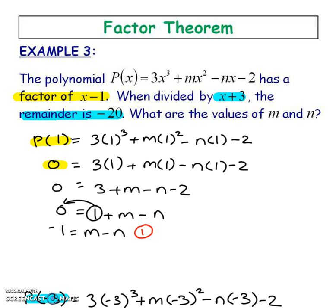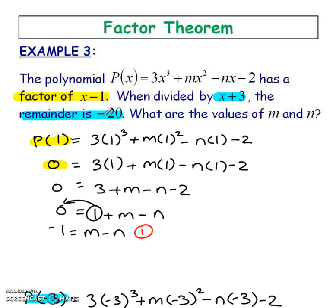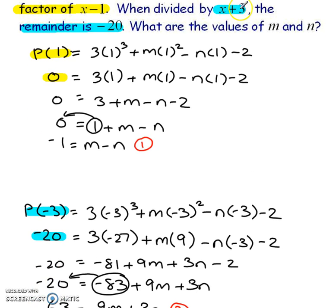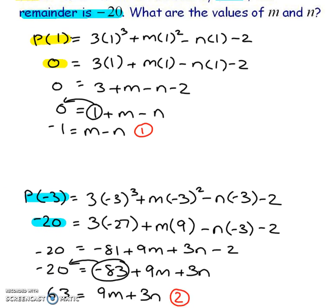One more factor theorem example — this is a tricky one that many teachers put on tests. Here I have a polynomial with unknowns m and n. You have to figure out what m and n are given two conditions. The yellow condition says the polynomial has a factor of x minus 1, which means subbing in 1 gives a remainder of 0: p(1) = 0. Simplifying that gives equation 1. The blue condition says when divided by x plus 3 the remainder is negative 20, so subbing in negative 3 gives negative 20. Simplifying gives equation 2.